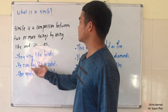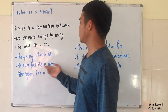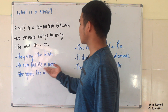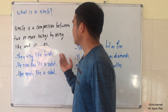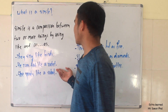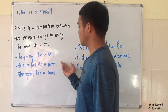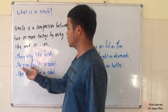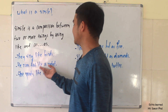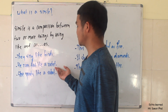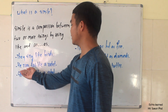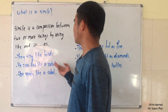Another example: 'He runs fast like a rocket.' In this sentence, we compare how he runs to a rocket. A rocket is very fast, that's why they say 'he runs fast like a rocket.' So we use 'like' to compare between these two things — how he runs and a rocket.